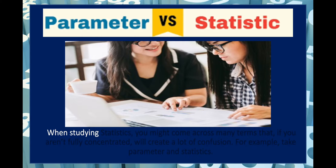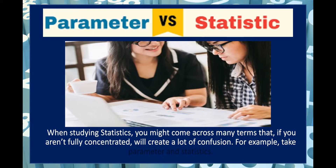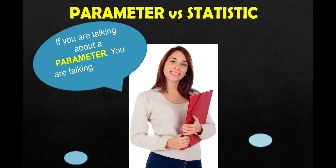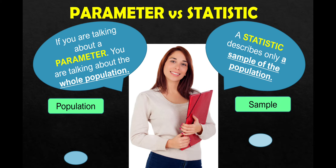When studying statistics, you might come across many terms that, if you aren't fully concentrated, will create a lot of confusion — for example, parameter and statistic. If you are talking about a parameter, you are talking about the whole population, whereas a statistic describes only a sample of the population. For example, the grade 11 senior high school students of CCNHS is a population (parameter), and the grade 11 ABM senior high school students of CCNHS is a sample (statistic).